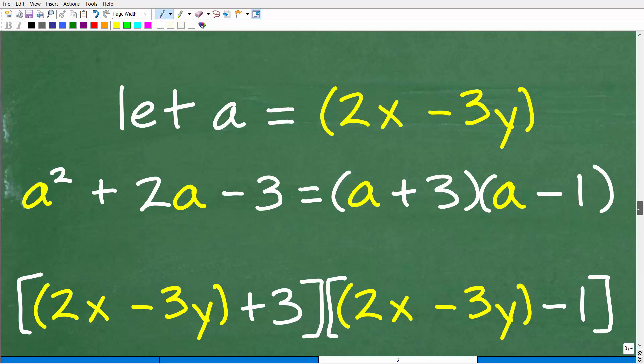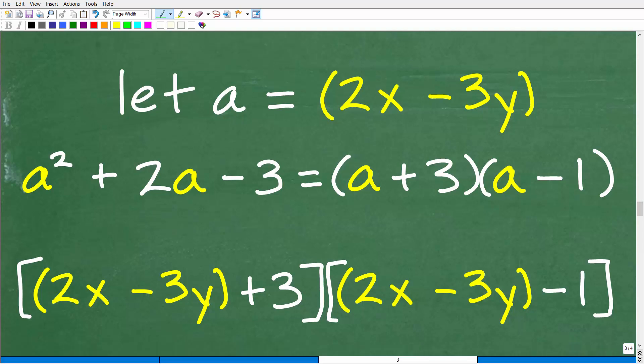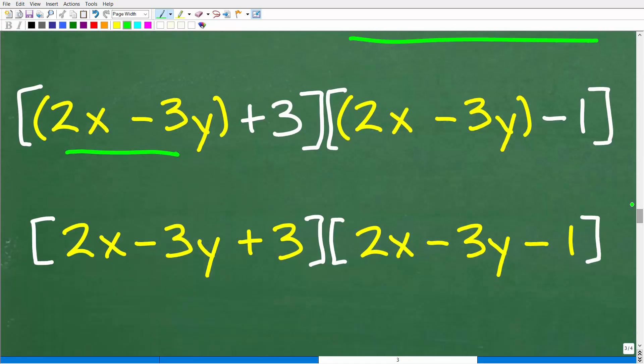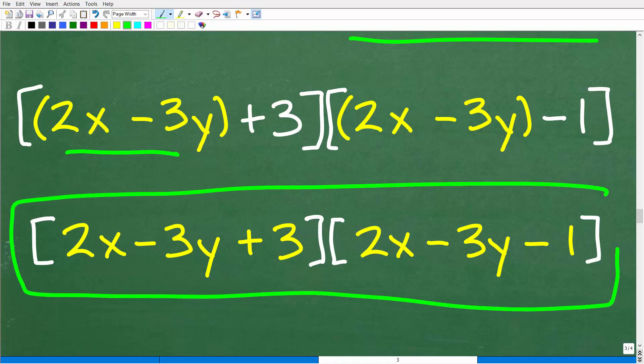So we factor this using substitution. So here's the factor. So now we're going to plug back in for these a's right here, 2x minus 3y. So this is a plus 3, but it's the same thing as 2x minus 3y plus 3 times this a minus 1, which is the same thing as 2x minus 3y minus 1. And, of course, we can clean this up a little bit more, drop these parentheses, and this is what we have.